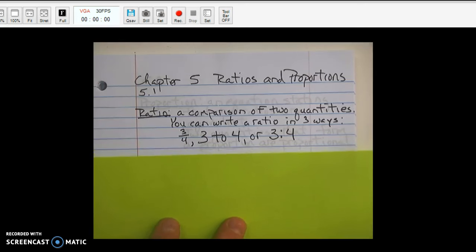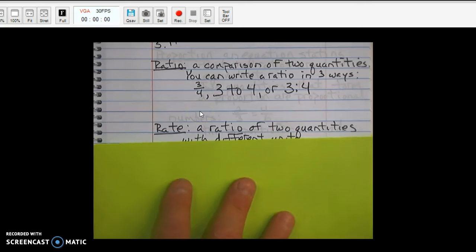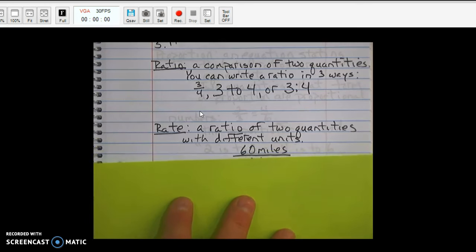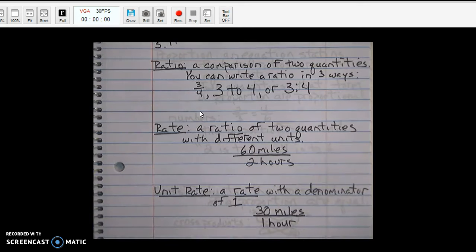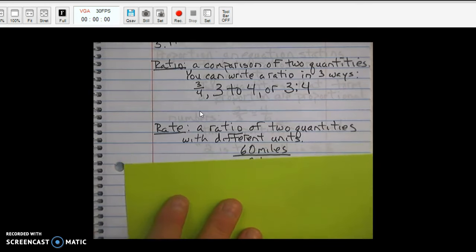Our next term. A rate. A rate is a ratio of two quantities with different units. For instance, 60 miles to two hours. Two quantities. Two quantities. Different units. The unit there is miles. The second unit is hours.